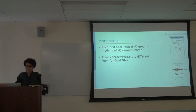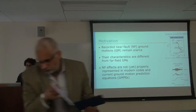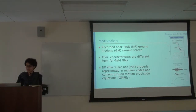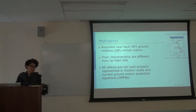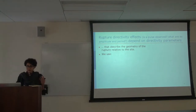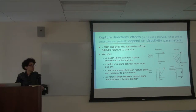I'll quickly go over the motivation and the fact that near-fault ground motions have characteristics that are different from far-field ground motions, mostly known for the rupture directivity effect and the fling step. These effects are not yet properly represented in modern codes and in current GMPEs. Our model mostly captures the rupture directivity effect, and it can also incorporate the fling step. These rupture directivity effects depend on directivity parameters which describe the geometry of the rupture relative to the site.